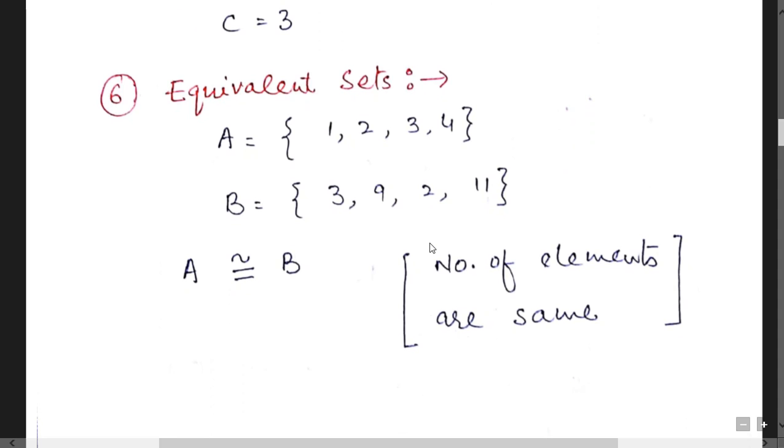Sixth category is equivalent set. Equivalent sets are those sets in which the number of elements of the set are same. None other than that.